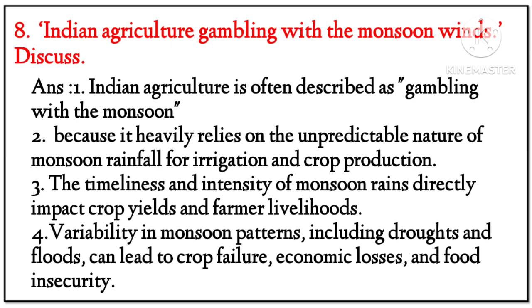Question 8: 'Indian agriculture is a gamble with the monsoon winds' — discuss. Answer: Indian agriculture relies on the unpredictable nature of monsoon rainfall for irrigation and crop production. The timeliness and intensity of monsoon rains directly impact crop yields and farmer livelihoods. Variability in monsoon patterns — including droughts and floods — can lead to crop failure, economic losses, and food insecurity.